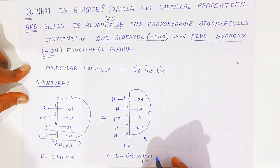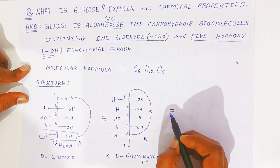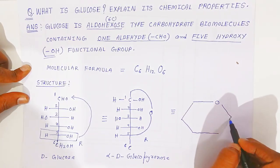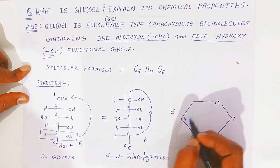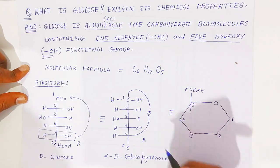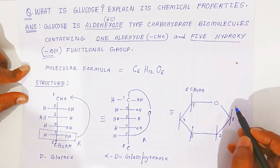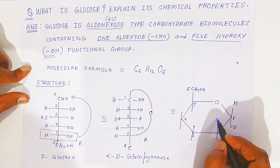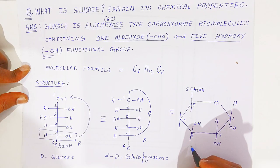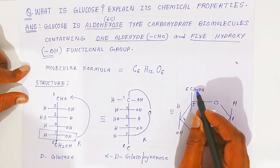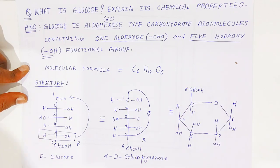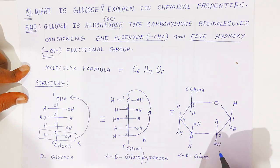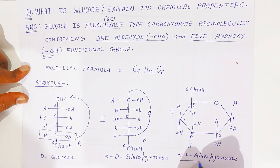The ring formed is a pyranose ring, so we call it glucopyranose. This can also be represented as a Haworth structure. Drawing the pyranose ring: carbon one is here, then carbons two, three, four, and six. Carbon is always tetra-valent. Hydrogens on the left-hand side are written above the ring and hydroxyl groups below. CH2OH is above the ring and hydrogen below at C6. This is the structure of alpha-D-glucopyranose. Glucose is always present in ring form.